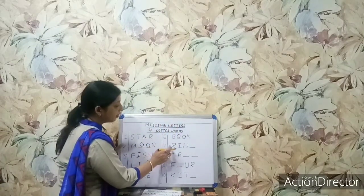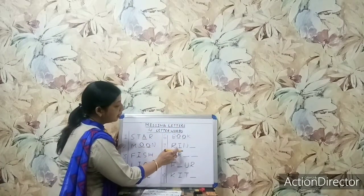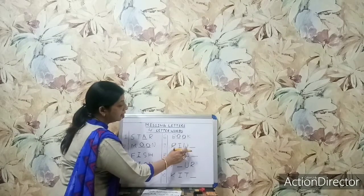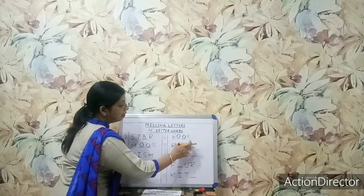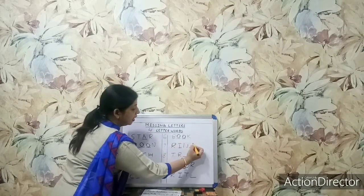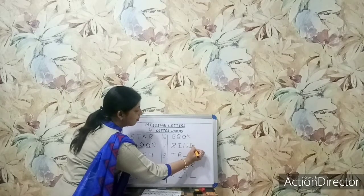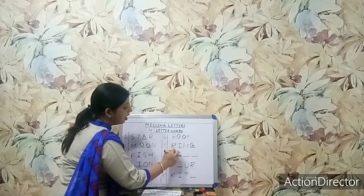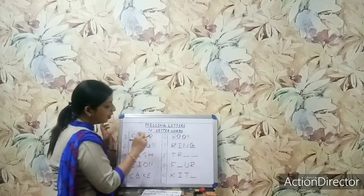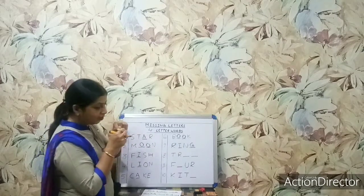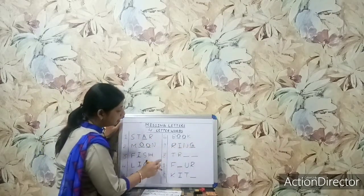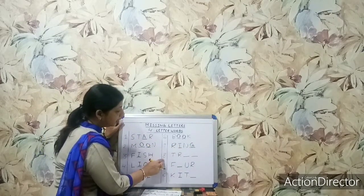Number 7: R-I-N-dash. I will write here G. See, I will write here G — it will become ring, R-I-N-G. Ring. This is a ring which we wear. Okay? R-I-N-G, ring.